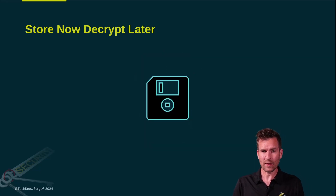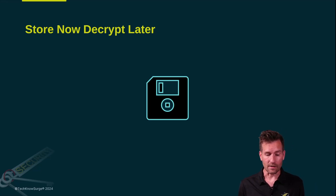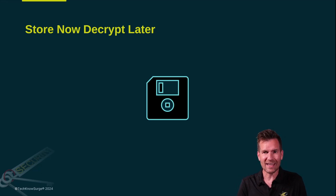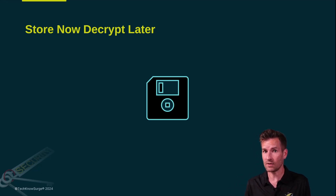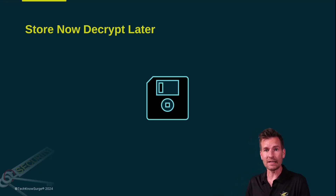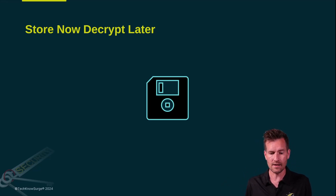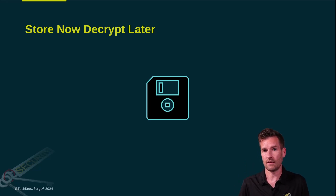Quantum computing isn't at a level that we need to be all that concerned, at least for a lot of our data that isn't going to be really sensitive five or ten years from now. However, there is this idea of store now and decrypt later. There could be intercepting of communication that's happening now — say it's top secret information that could still be sensitive five or ten years from now. They could have captured that information and then decrypt it later. That can be problematic, which is why if you have really super sensitive information that will remain sensitive for the next five or ten years, you need to be thinking at a level greater than our typical encryption level right now.